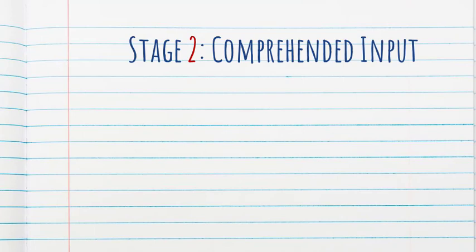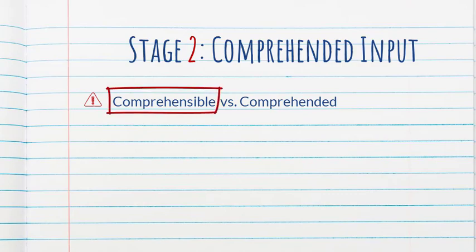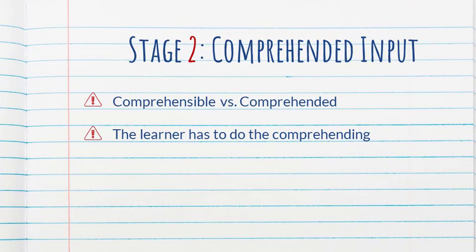The next piece of the puzzle, according to the author, is comprehended input. And she makes it a point to distinguish between comprehensible and comprehended to highlight the learner's role in comprehending. When we say comprehensible, we seem to be focusing on what the teacher is doing, or we're focusing on the source of the input. But the author wants to underscore that although we as teachers can make it comprehensible, it is the learner who has to do the comprehending. So we want the input to be comprehended, not just comprehensible.